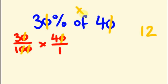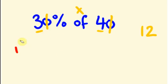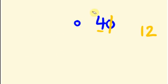So 3 into 4 is 12. This is the easier way of identifying the percentage. Let us see another example so that you will get the concept much easier.